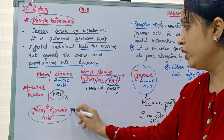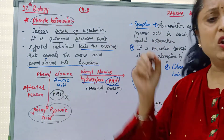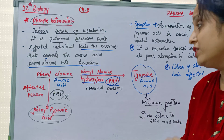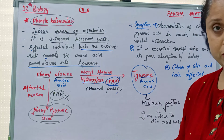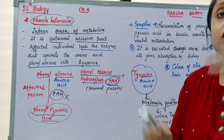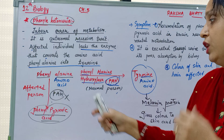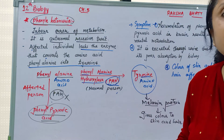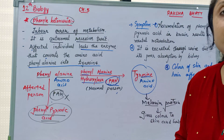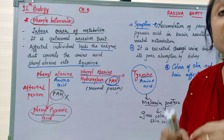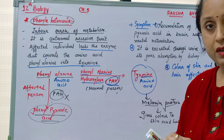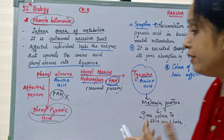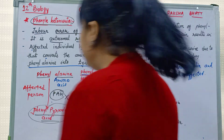This phenylpyruvic acid is very very toxic and very harmful to us. If this phenylpyruvic acid circulates throughout the body, it affects various organs and is responsible for different types of symptoms.